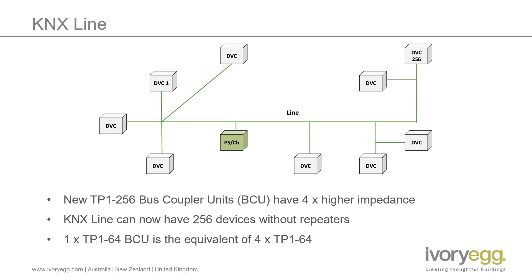If you do have a mixture of older and new devices, then each TP164 device takes the place of four TP1256 devices. As long as the total is less than 256, the line will operate correctly. So for example, if you have 32 older devices, then 32 times 4 equals 128, meaning you could have 128 of the newer devices on the same line.